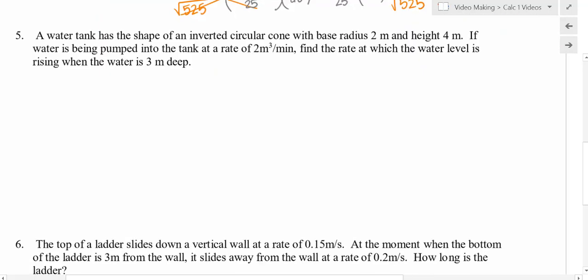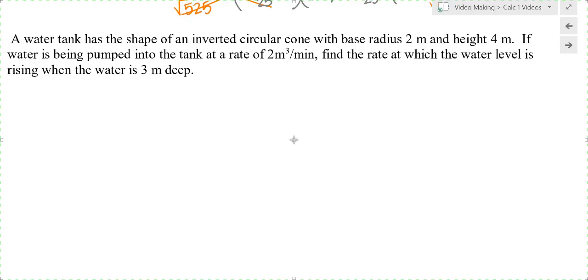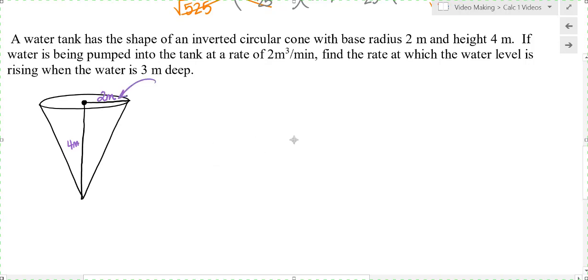Let's look at a tank here. A water tank has the shape of an inverted circular cone with base radius 2 meters and height 4 meters. If water is being pumped into the tank at a rate of 2 cubic meters per minute, find the rate at which the water level is rising when the water is 3 meters deep. So we're going to draw a picture. Base radius 2 meters, and the height is 4 meters. This is the size of my cone that is not changing. Now water is being pumped into the tank.